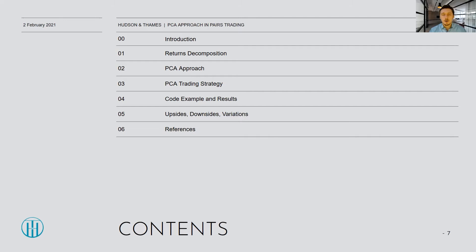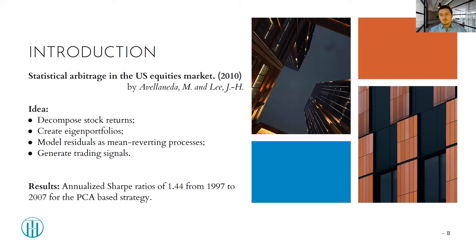This presentation and the module in ArbitrageLib are based on the paper 'Statistical Arbitrage in the US Equities Market,' published in 2010 by Avellaneda and Lee. The idea was to decompose stock returns, create eigenportfolios, model the residuals as mean-reverting processes, and generate trading signals. The authors showed the PCA strategy had an annualized Sharpe ratio of 1.44 from 1997 to 2007, accounting for transaction costs and slippage, though the best Sharpe ratios were observed before 2003.